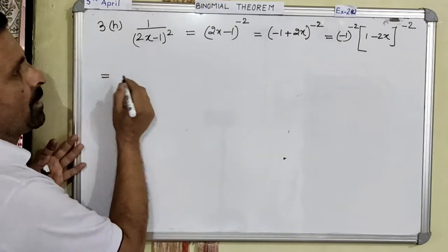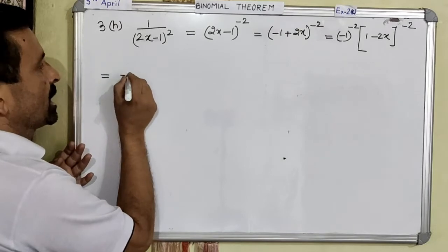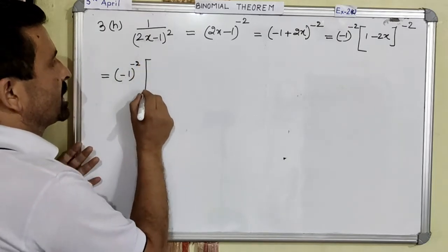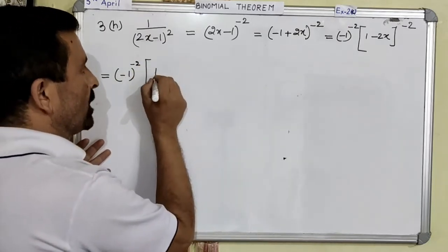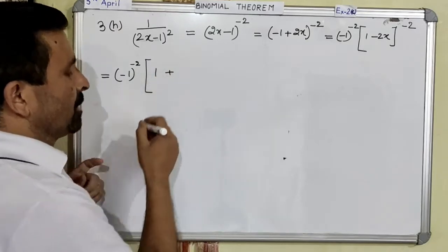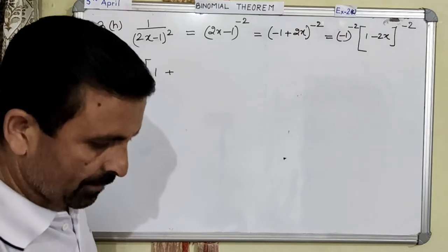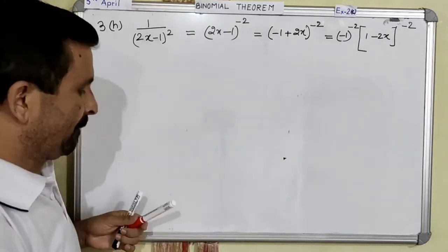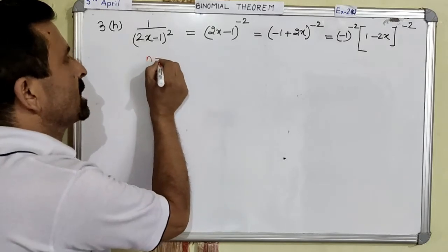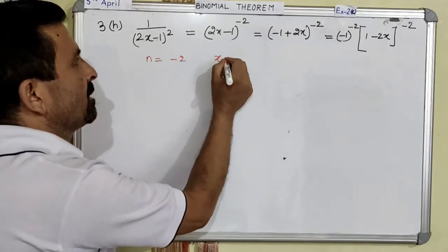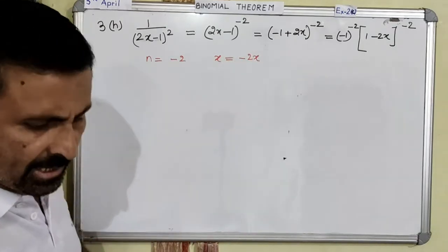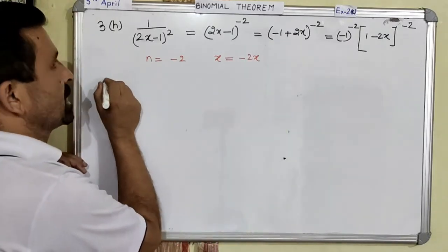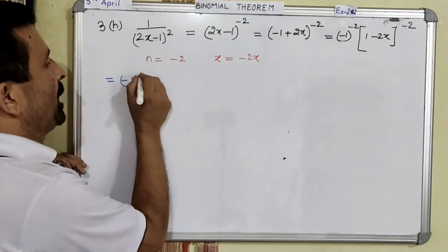So we are going to start the binomial expansion. This is minus 1 to the power negative 2. The value of n is negative 2, and your x is negative 2x. The expansion: first term is always 1, then plus nx — that is minus 2 and minus 2x.